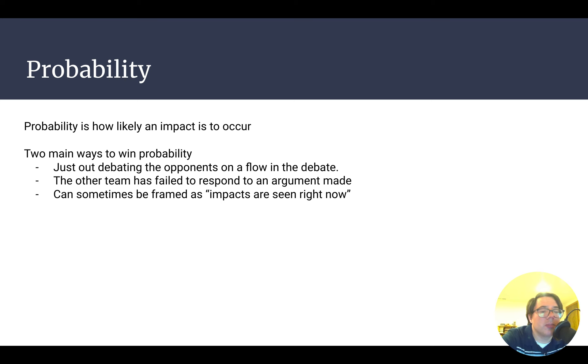Probability simply means how likely is an impact to occur. I believe there are two main ways to win probability. The first two are really about how the debate plays out. If you are just out-debating another team on the flow, or if they drop some critical arguments, you can minimize probability of an AF if they concede solvency arguments. That would be a way to lower the probability of their impacts occurring.